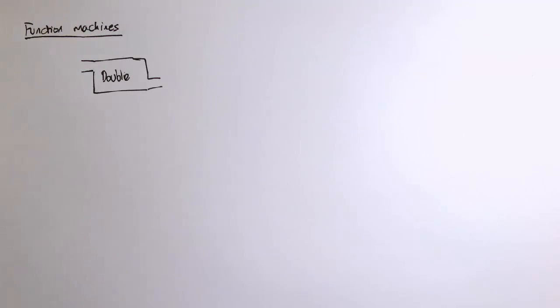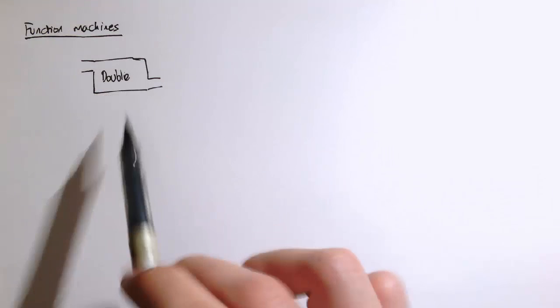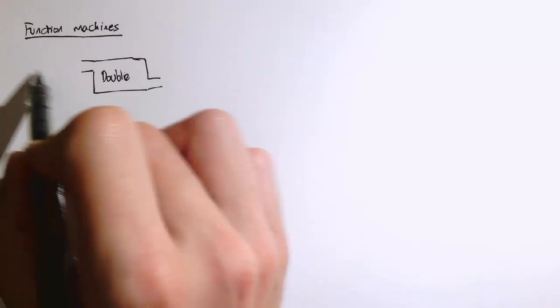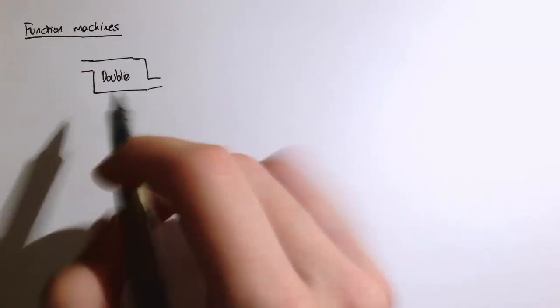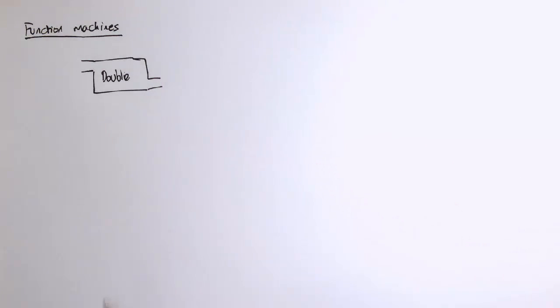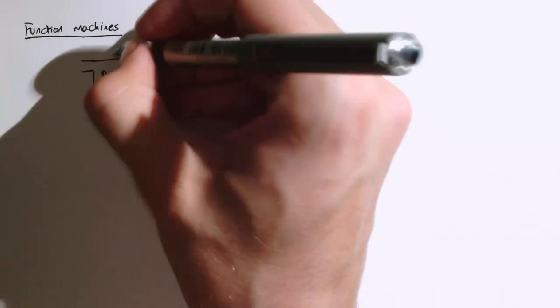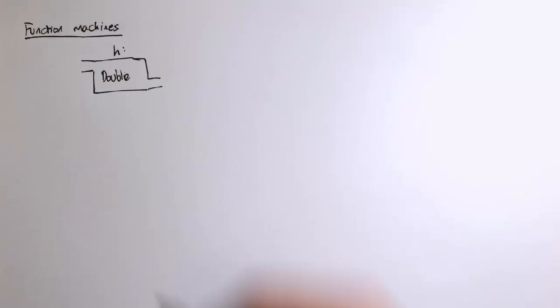One really useful way of thinking about functions is as a machine. So actually that last function we had there, just doubling, I can think of it as a machine that takes values as inputs and then outputs something else. The machine is doing something to that input and producing an output. So again, let's keep the name for this machine as h.